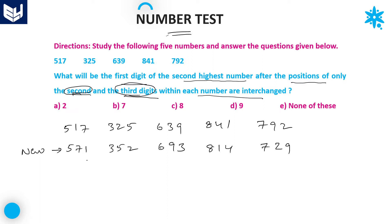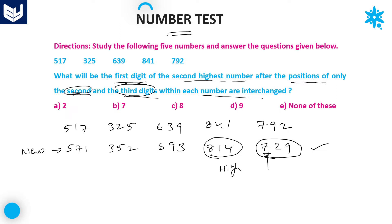Now observe all the new numbers: 571, 352, 693, 814, and 729. The highest number is 814. The second highest number is 729. We need the first digit of 729, which is 7. Option B is the right answer.